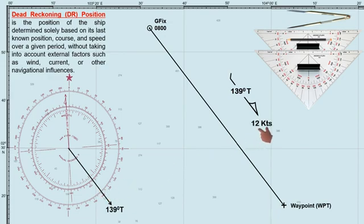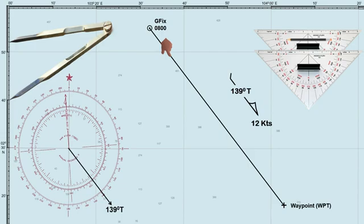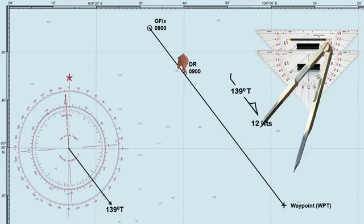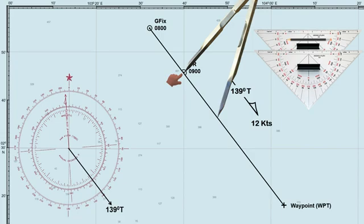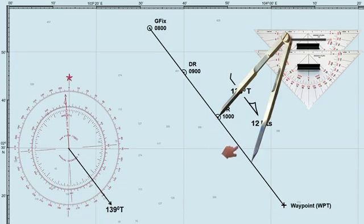If the ship has a speed of 12 knots, this means that she covers 12 nautical miles in 1 hour. To determine her DR position at 0900 hours, use the compass divider and measure 12 nautical miles on the latitude scale. Lay down the compass divider from the ship's last known position along the planned track. This point will be the ship's DR position at 0900 hours, represented by the symbol — a half circle with a dot inside. Measuring another 12 nautical miles gives the DR position at 1000 hours, and another 12 gives 1100 hours, and so on.